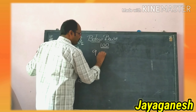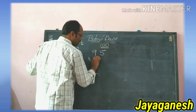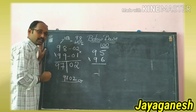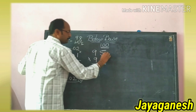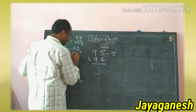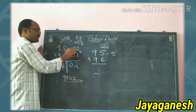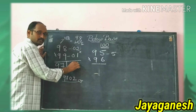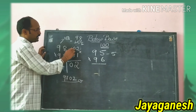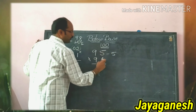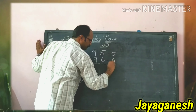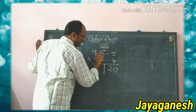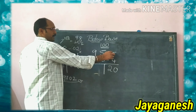One more question: 95 into 96. From the base how much less? For 95 it is minus 5, and for 96 it is minus 4 — I am writing them as minus 05 and minus 04 to indicate 2 digits. Multiplying the differences: 5 fours are 20.